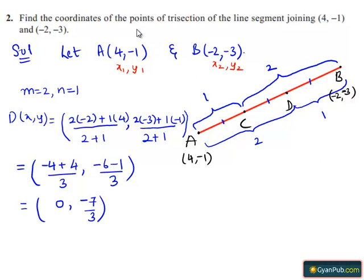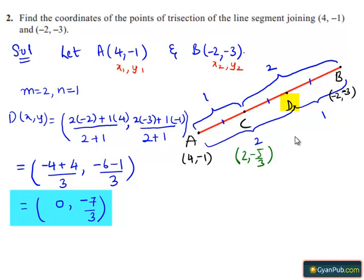Hence, the coordinates of the points of trisection of line segment AB are (2, -5/3) and (0, -7/3).